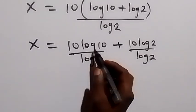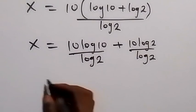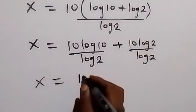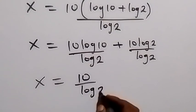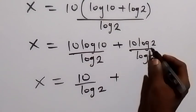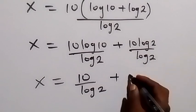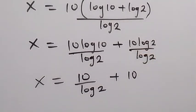And from here, this will reduce to... log 10 is the same thing as 1, so this will become x equals to 10 over log 2. And on this side we have plus... log 2 cancel log 2 and we have 10 left here.